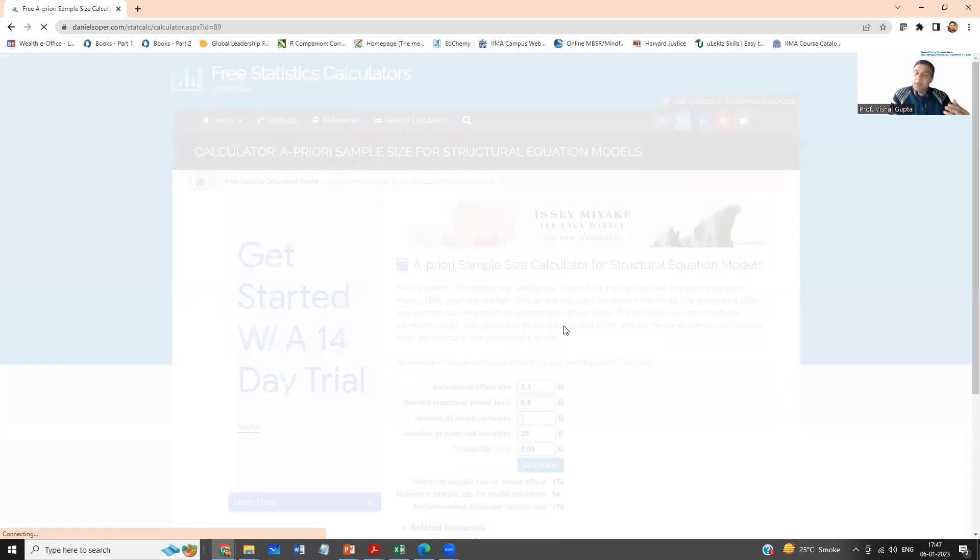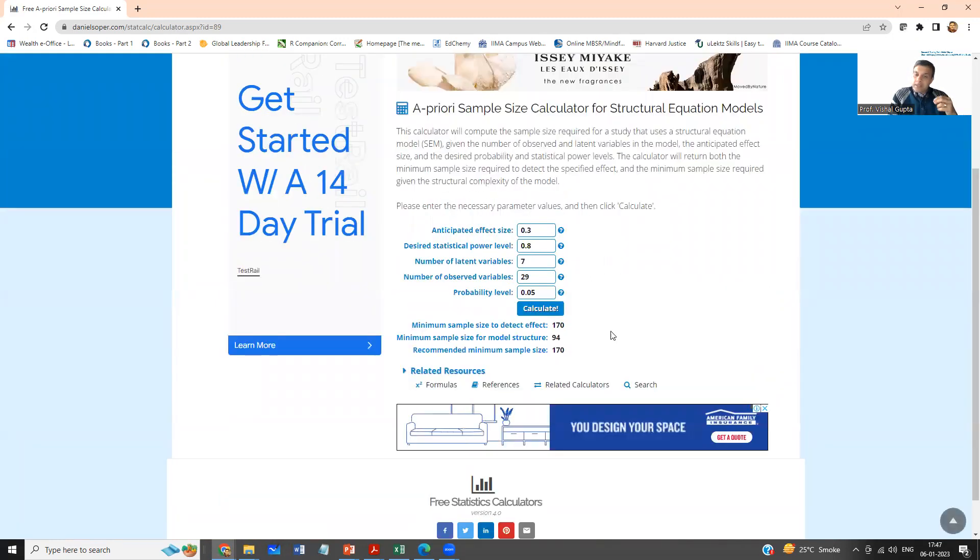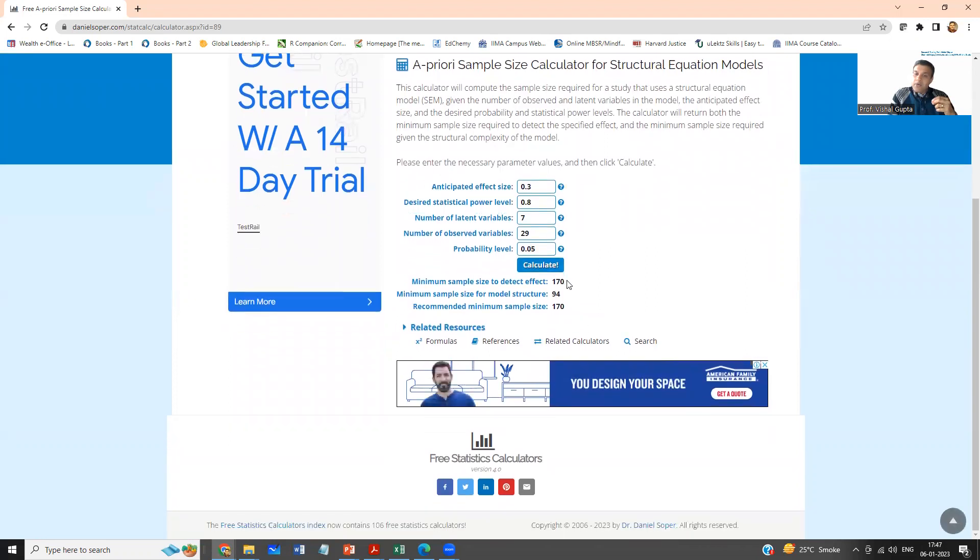Now when you press calculate, it presents to you the sample size required to detect effect, sample size which should be good for your structural model, and a recommended minimum sample size, which is 170.